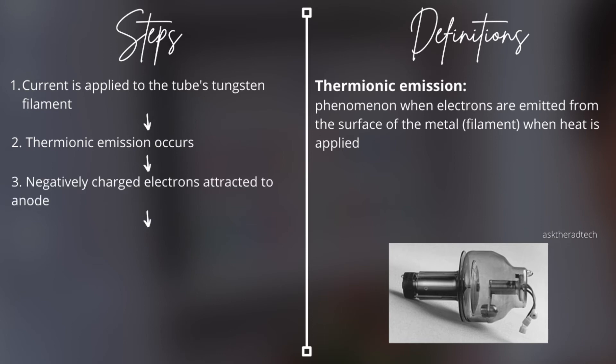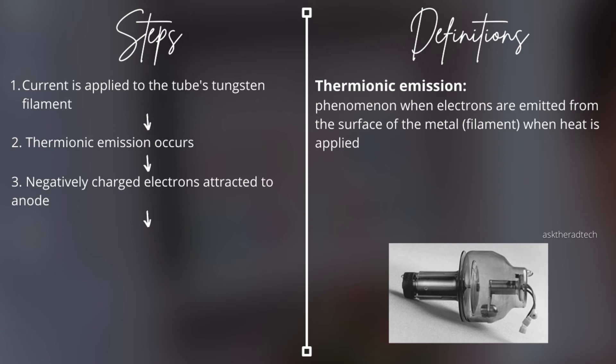Step three: due to attraction, the negatively charged electrons that are produced are drawn across the tube toward the positive terminal — the anode. The electrons hit the tungsten target of the anode with very high energy and velocity, where they dramatically stop. The energy with which they hit the target is determined by the tube's selected potential voltage.